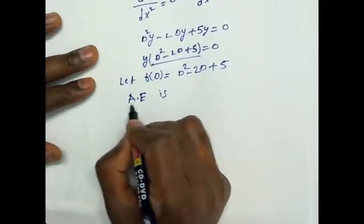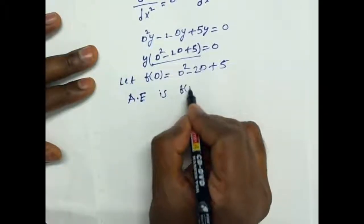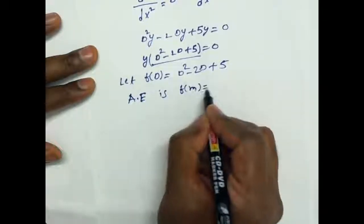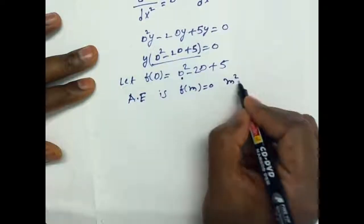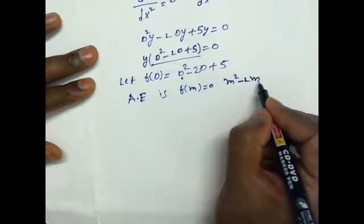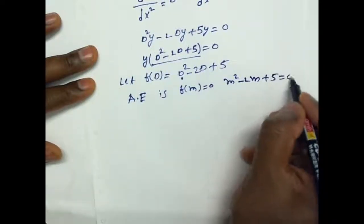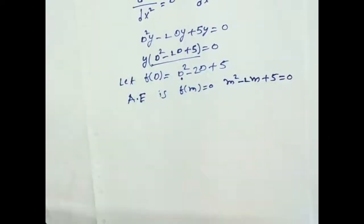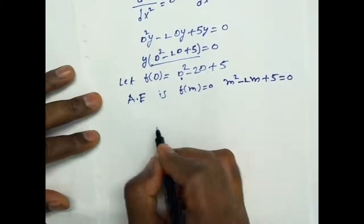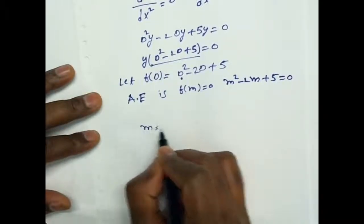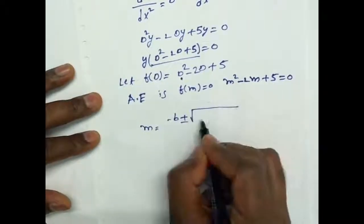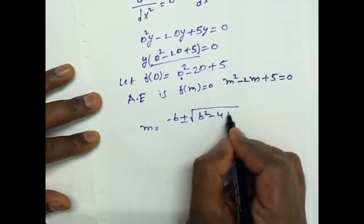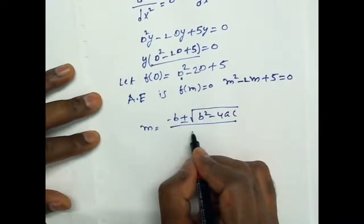So the auxiliary equation is d squared minus 2d plus 5 is equal to 0.